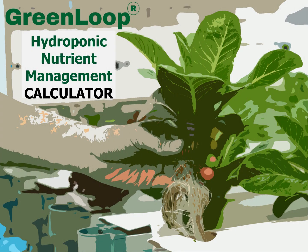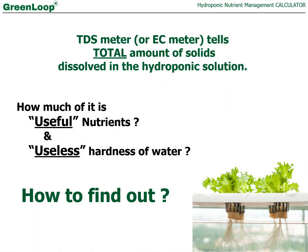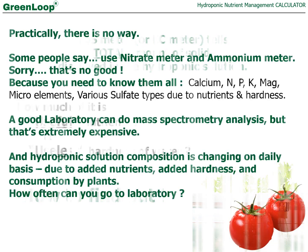Hello everybody, this video is from Green Loop. This is about the hydroponic nutrient management calculator. Normally the TDS meter or the EC meter tells the total amount of solids dissolved in the hydroponic solution, but how much of it is useful nutrient and how much of it is useless hardness of water? How to find it out?